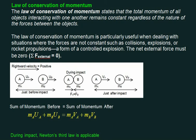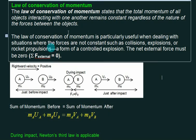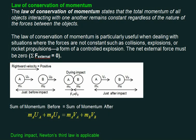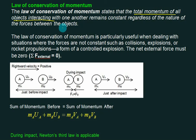By the law of conservation of momentum, the total momentum of all objects interacting with one another remains constant, regardless of the nature of the forces between them. This is conservation of momentum, but the net external force must equal zero.